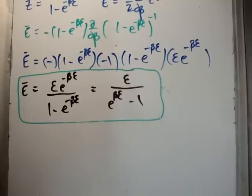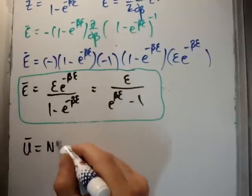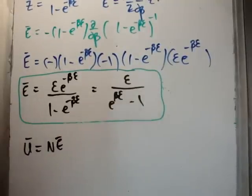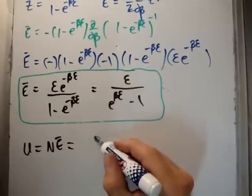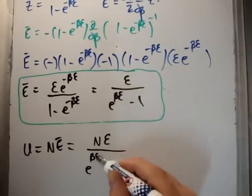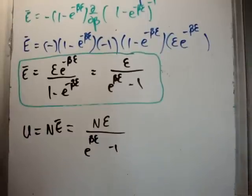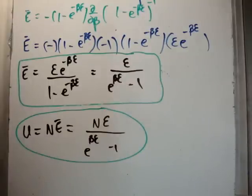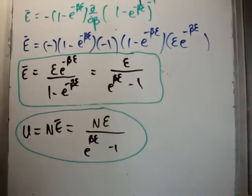That's the average energy of a single oscillator. For N identical oscillators the total average energy is Ū = N·Ē = N·ε / (e^(βε) - 1). This is exactly the formula I start with in my video on the Einstein specific heat. In the next video I'll differentiate this with respect to T to get the heat capacity. Thanks for watching — please share with friends, subscribe, and visit UniversityPhysicsTutorials.com.